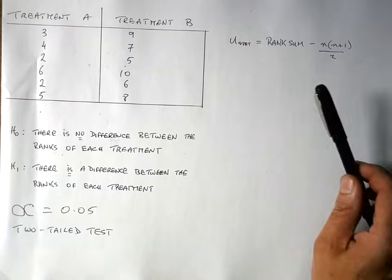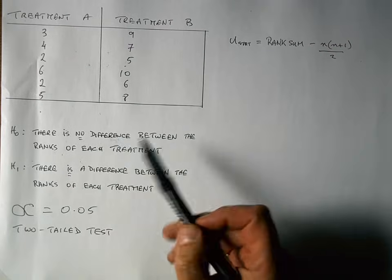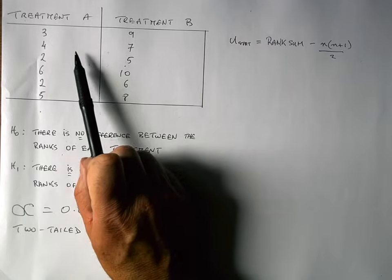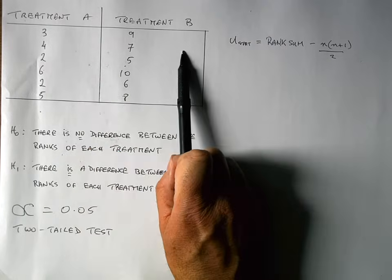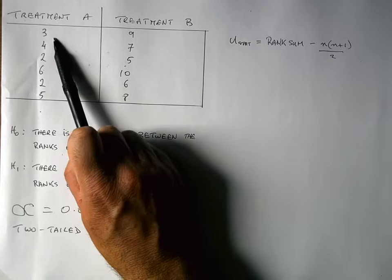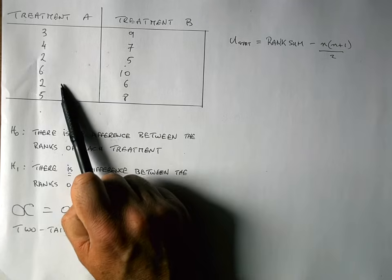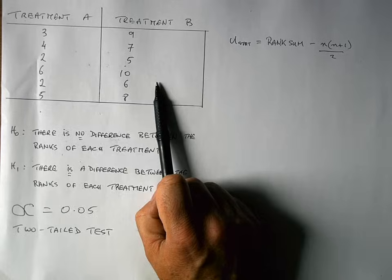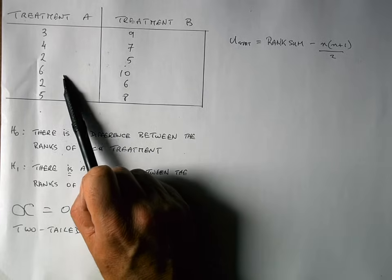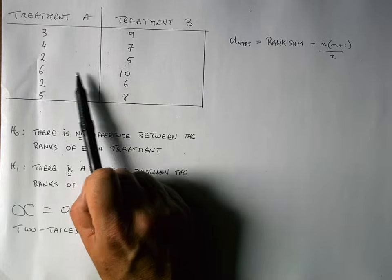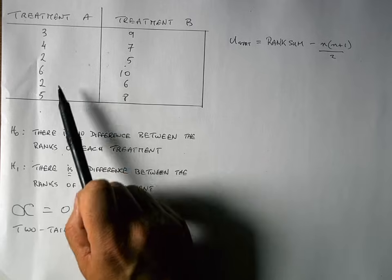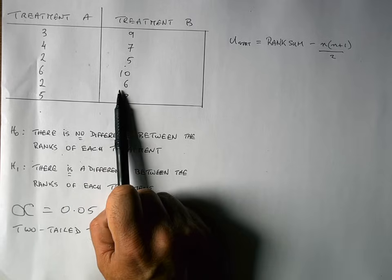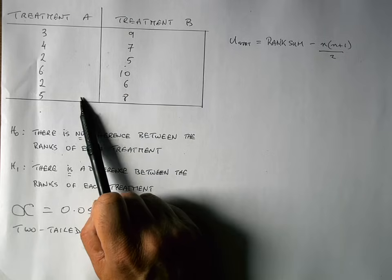Before we start, let's take a look at the data we are going to use in this test. I've got the results of an experiment where I want to compare two treatments, treatment A and treatment B. These are scores or ratings by six people for treatment A and six people for treatment B. This tells us this is an unpaired or independent test, as we have two groups being tested once. We have equal sample sizes here — they don't have to be for a Mann-Whitney test, they just happen to be so in this case.